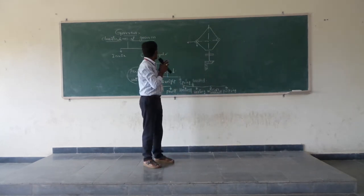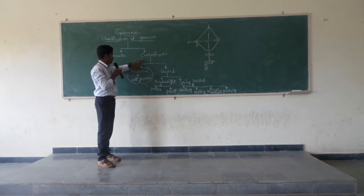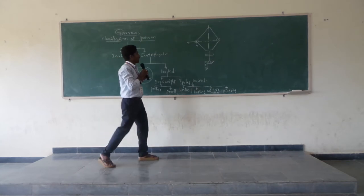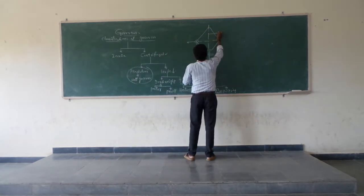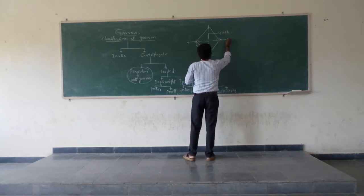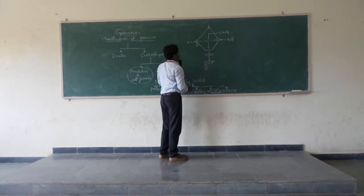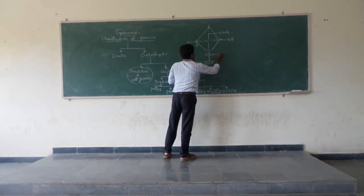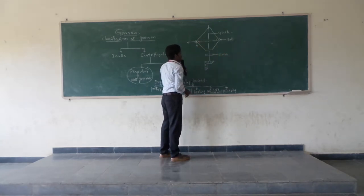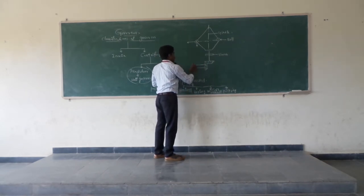This is the diagram of the Watt governor. The Watt governor is a type of centrifugal governor, and the centrifugal governor is recommended under the loaded governor category. In the diagram, we can see the spindle, the balls, and the sleeve.